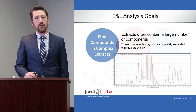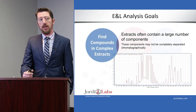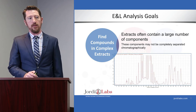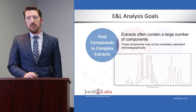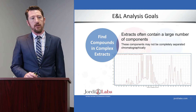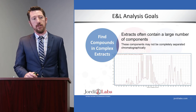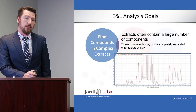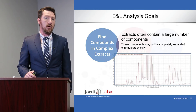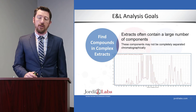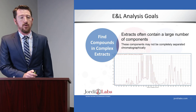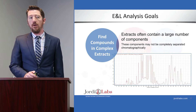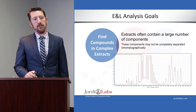Once we have that data, we have three major goals in an E&L analysis. The first goal is to find compounds. E&L extracts are often very complicated — here we have a chromatogram of a relatively complicated extract showing a large number of peaks, some of which appear to be overlapping and not completely separated chromatographically. So one of the major challenges is to find all of the components that may be present in a complex matrix.